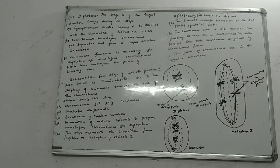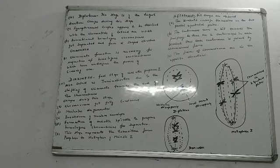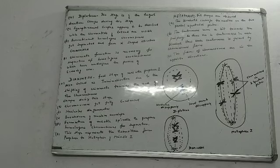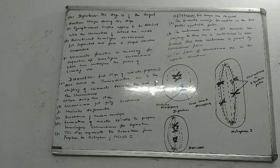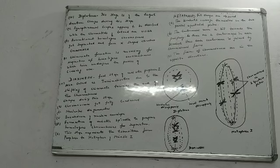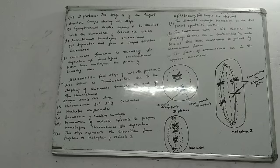So after the diakinesis stage, prophase I was over and we moved on to metaphase I. In metaphase I, three events took place: the bivalents arranged themselves on the two parallel equatorial planes; the centromere moves a bit towards the periphery; and since we have two centromeres in a bivalent, each centromere is joined by chromosomal fibers which are in opposite directions.